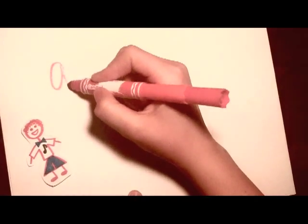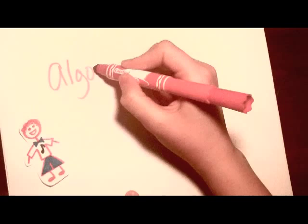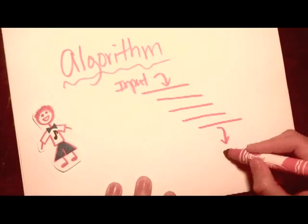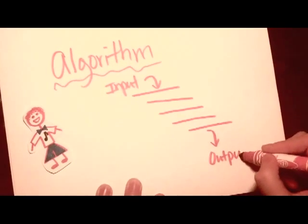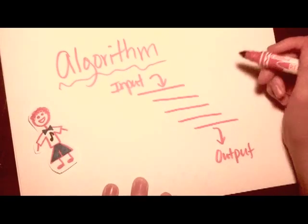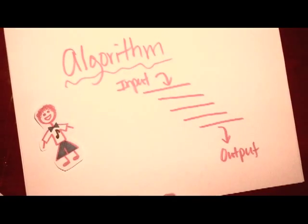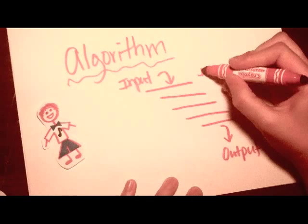Tim used an algorithm in order to get Pandora to work. An algorithm is simply a list of instructions that creates an output. It's basically just an if-then statement.